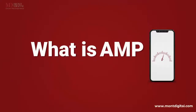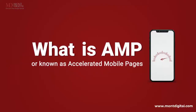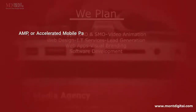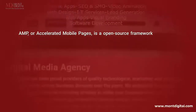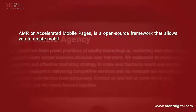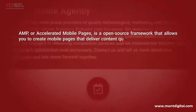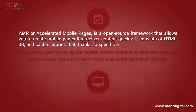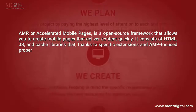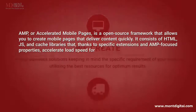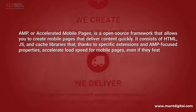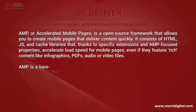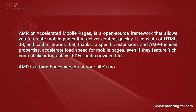What is AMP, or known as Accelerated Mobile Pages? AMP is an open source framework that allows you to create mobile pages that deliver content quickly. It consists of HTML, JS, and cache libraries that, thanks to specific extensions and AMP-focused properties, accelerate load speed for mobile pages, even if they feature rich content like infographics, PDFs, audio files, or videos.